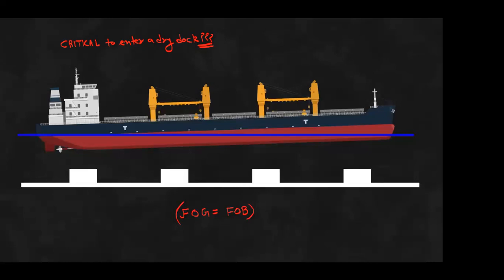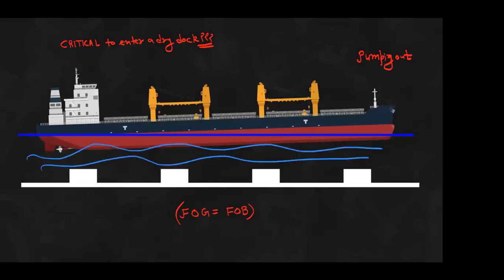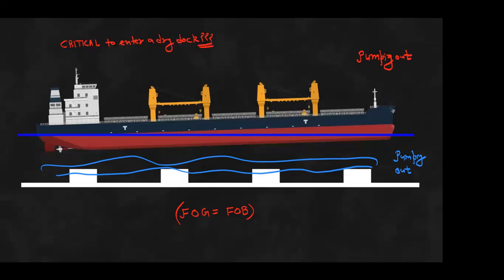When the gates are locked, we start pumping out the water. Say the water level was here, and the blocks are lined up with the centerline of the ship. As the water reduces, the ship gets closer to sitting on the blocks. Because of this pumping-out operation, a force will start acting — and this force is known as the upthrust force.